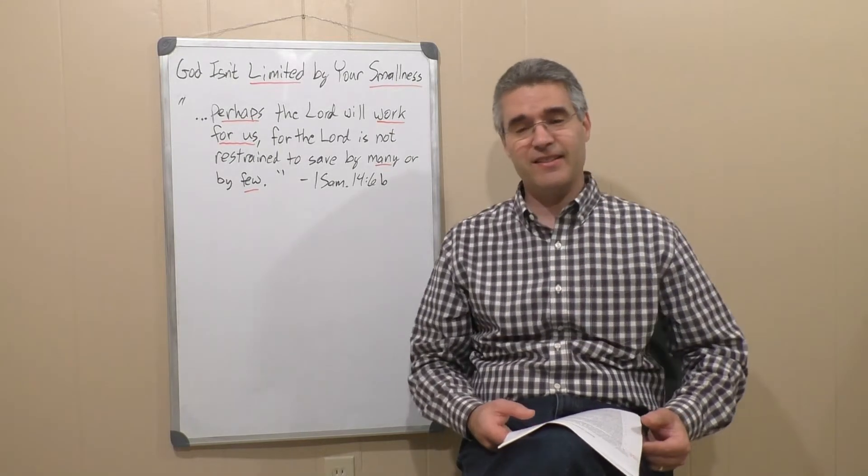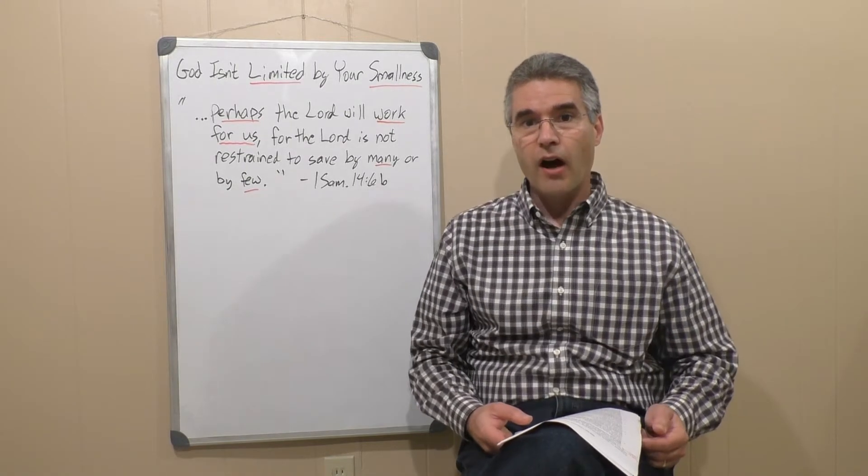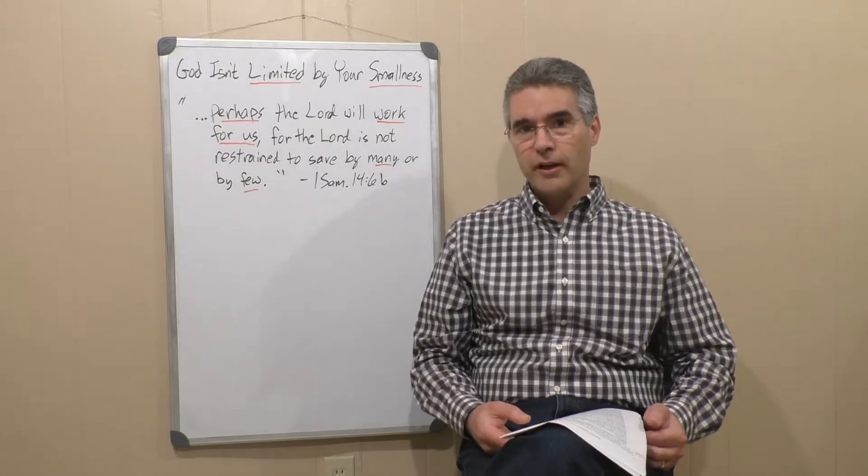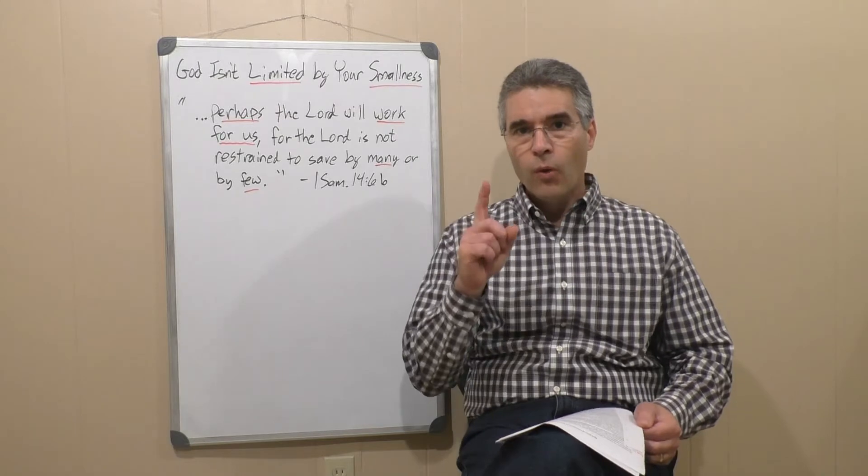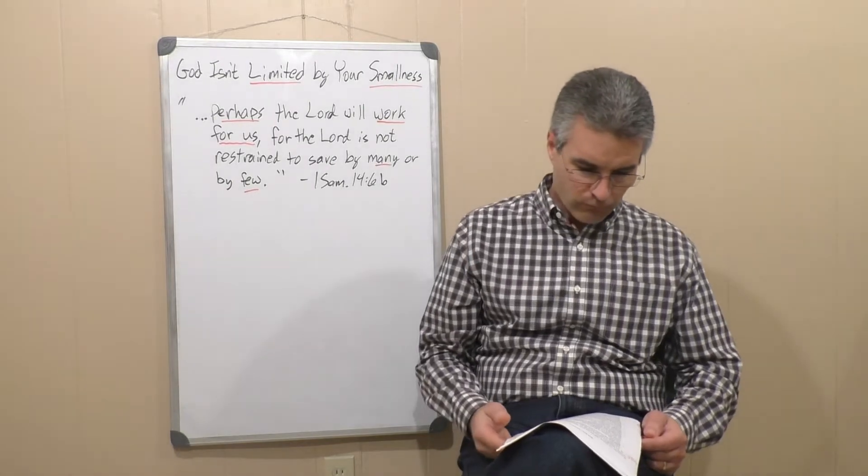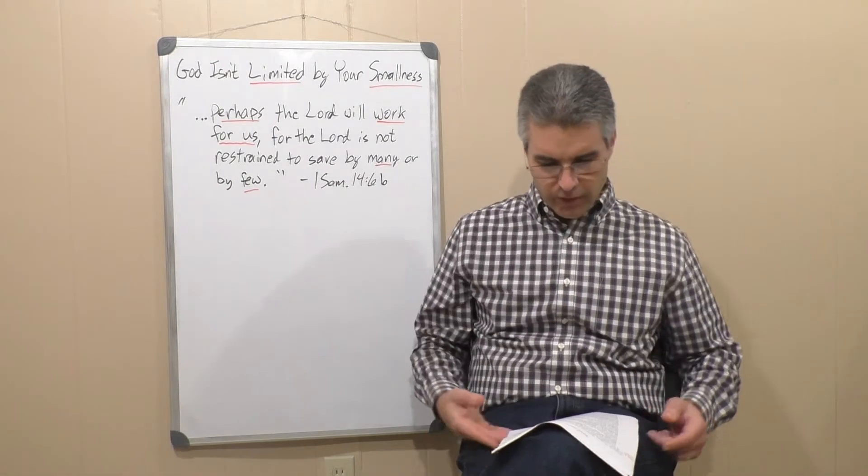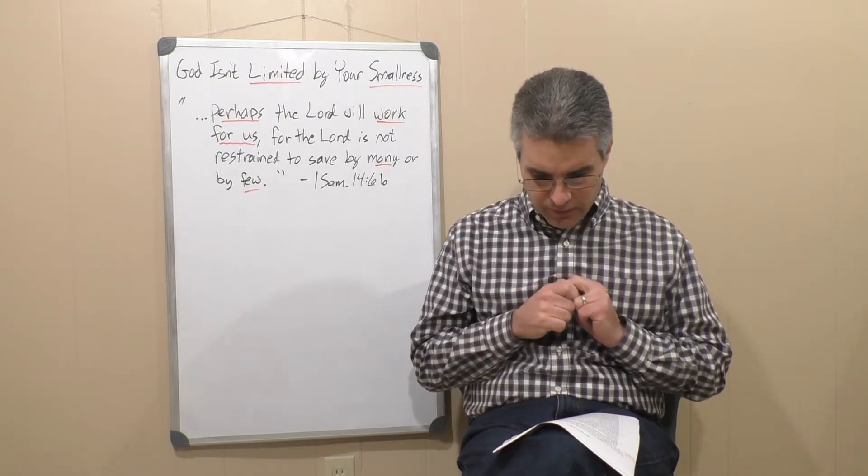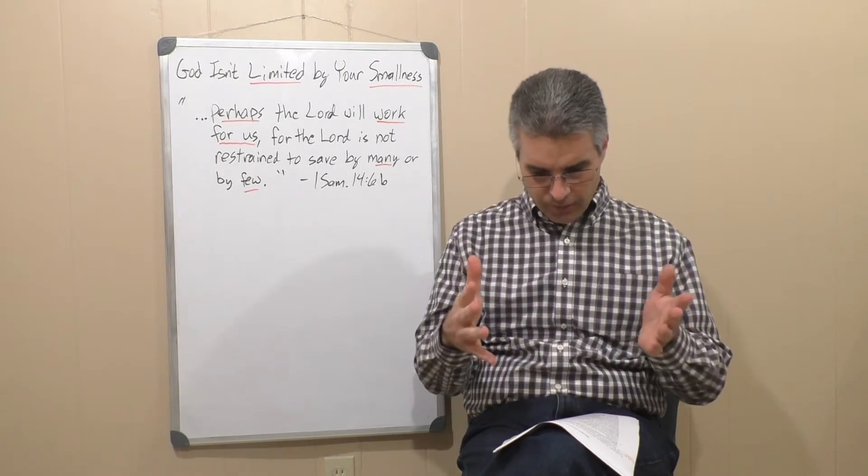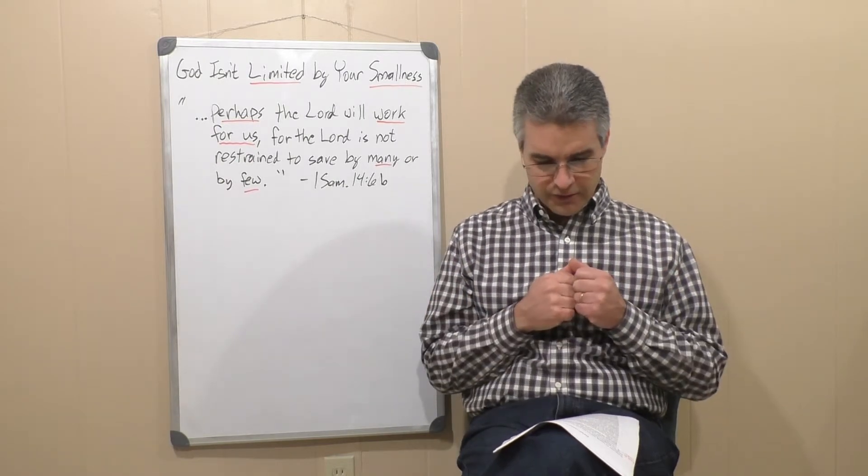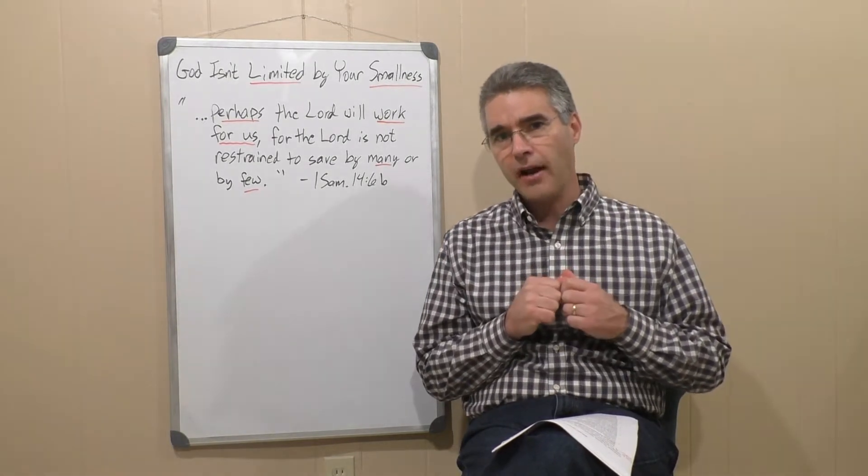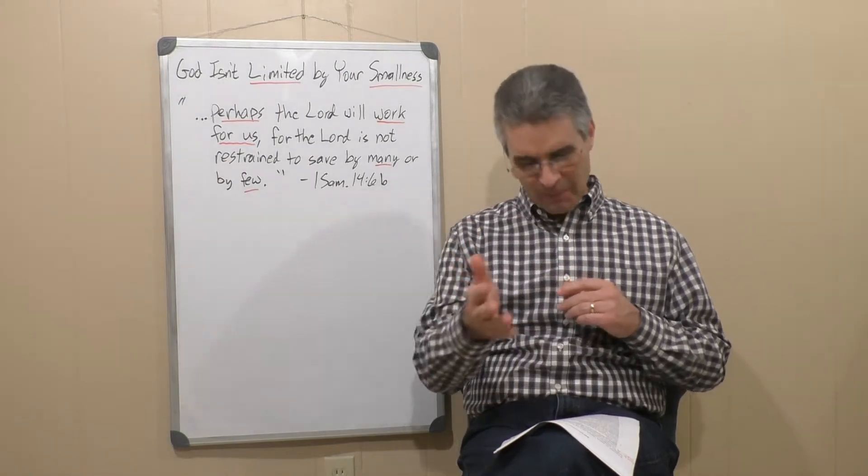So things seemed really bleak that day, but God gave a massive victory, and he did so largely through the instrumentality of one young man doing one really bold action. Here's the key verse that I've written part of up here. 1 Samuel 14:6, Jonathan said to the young man who was carrying his armor, come, let us cross over to the garrison of these uncircumcised. Perhaps the Lord will work for us. For the Lord is not restrained to save by many or by few.